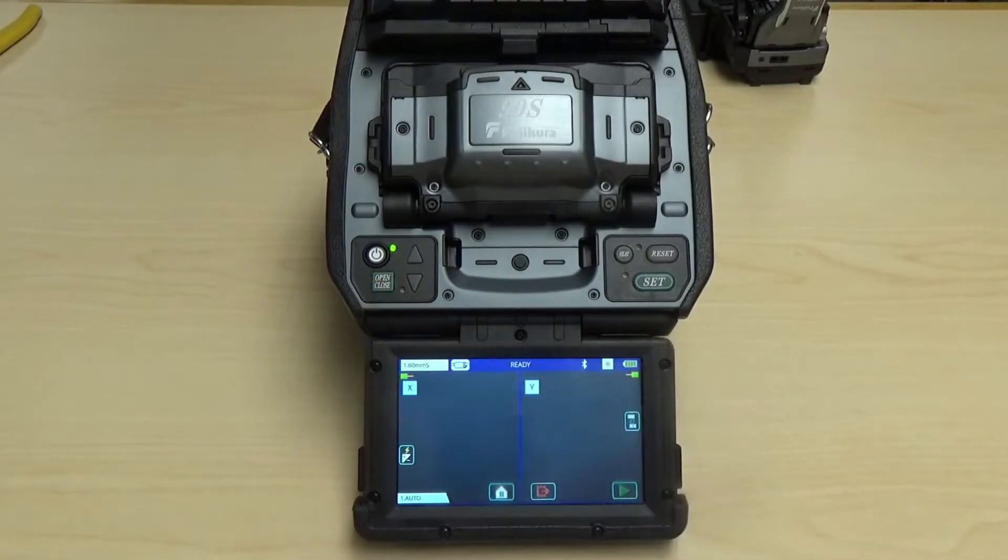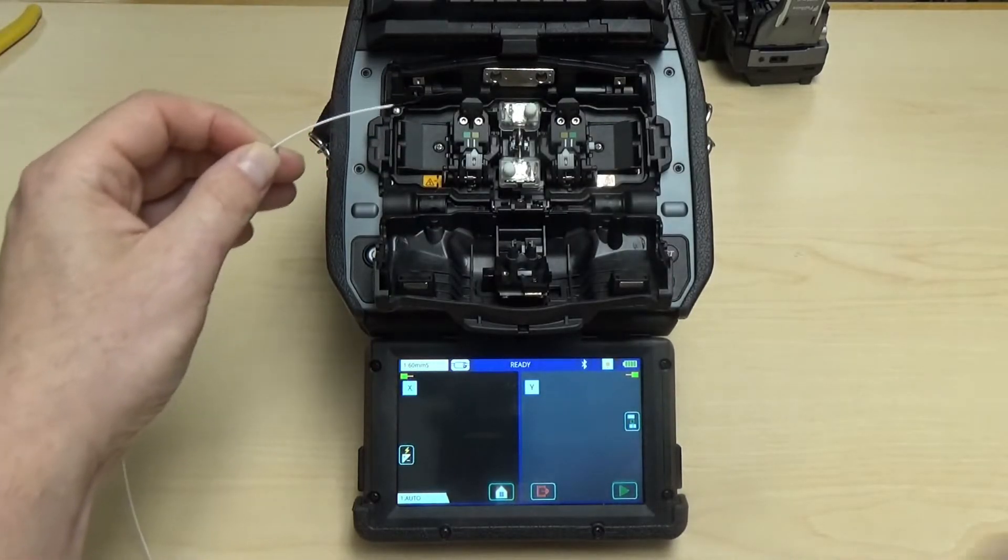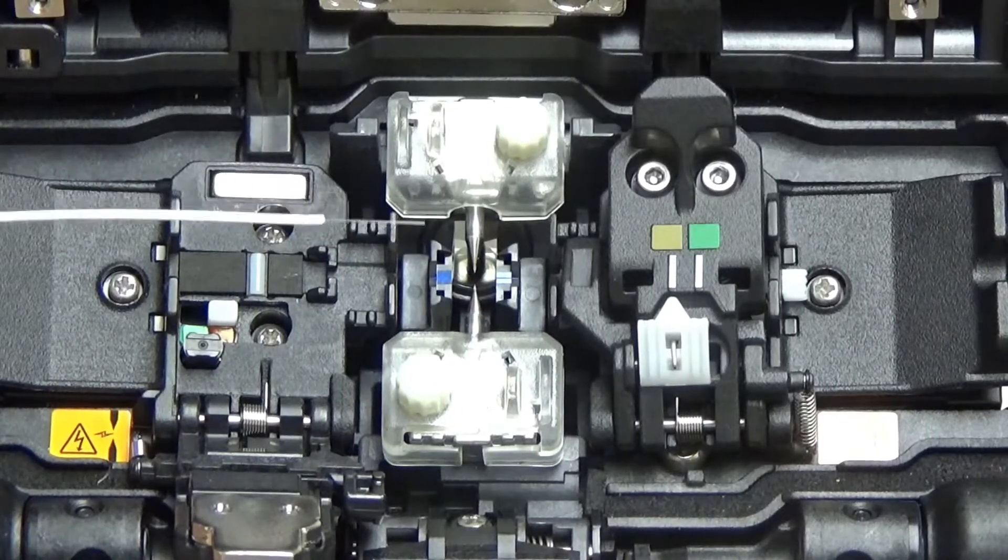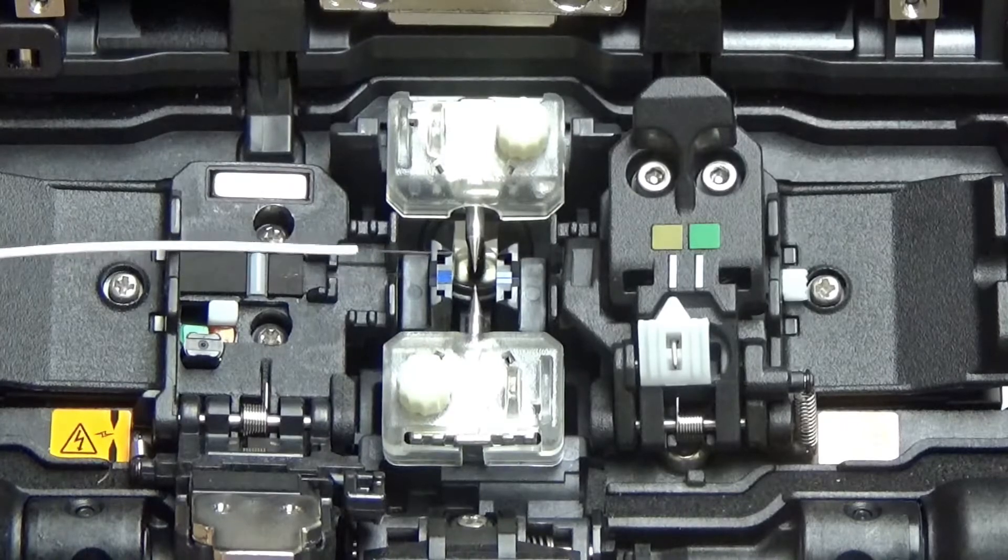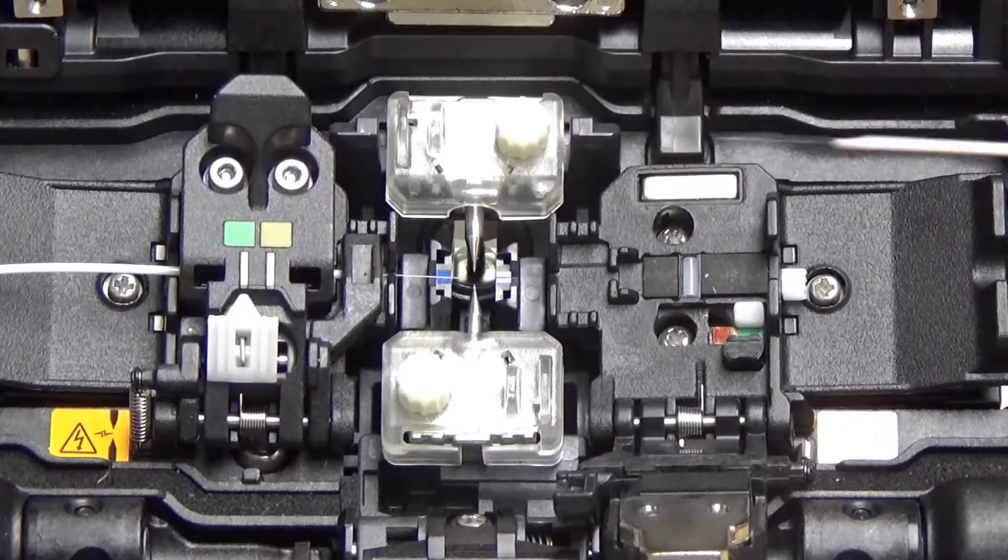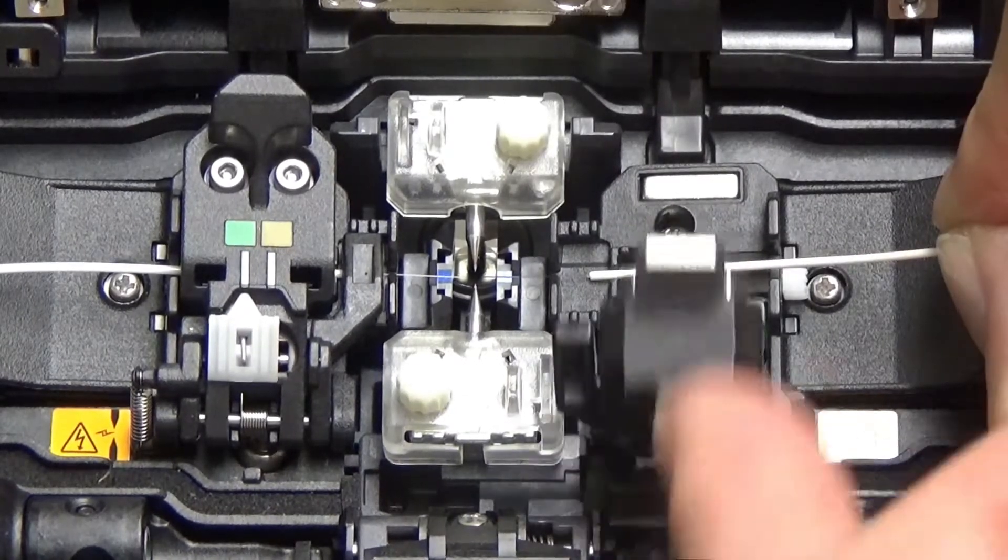So with our splicer prepped, we're now ready to load in our fibers. I'll start with the loose buffer fiber. And then on the right hand side I'll load in my tight buffer fiber. Hit set and away we go.